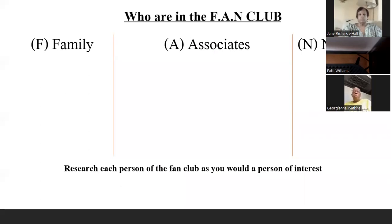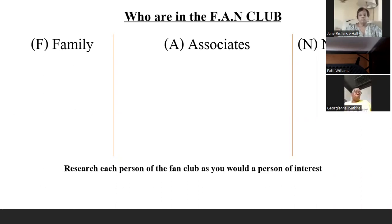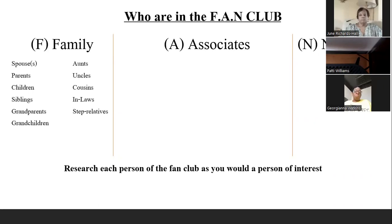So who is in the FAN club? The F stands for Family — spouse or spouses, parents, children, siblings, grandparents, grandchildren, aunts, uncles, cousins, in-laws, and step relatives. A lot of people just focus on their direct line and don't research these other people.